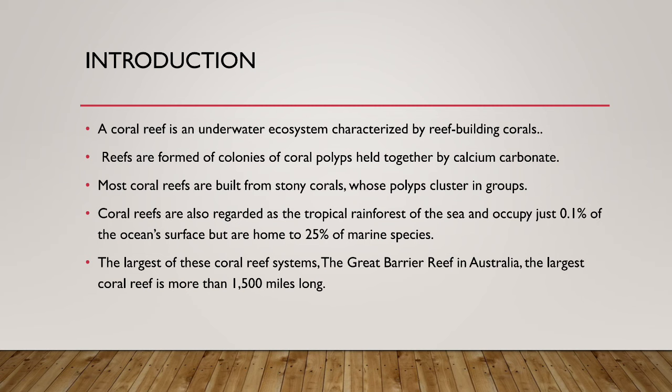The most special thing about tropical rainforests is that the species, flora, and fauna are abundant. Coral reefs occupy just 0.1% of the ocean surface but are home to 25% of all marine species — you can see from this fact how vast this ecosystem is. The largest coral reef system is found in Australia: the Great Barrier Reef, which is 1,500 miles long.